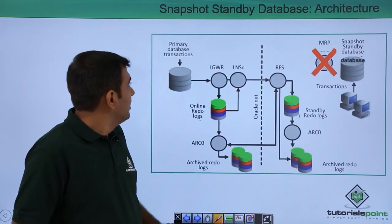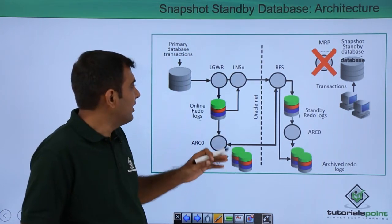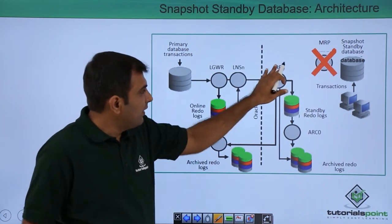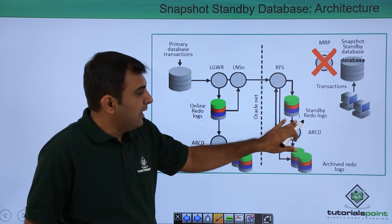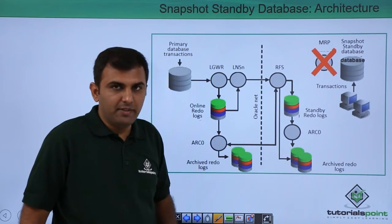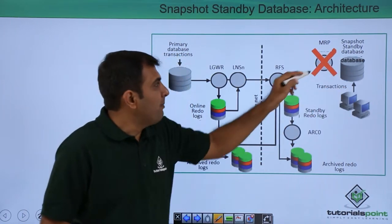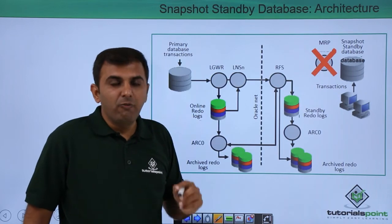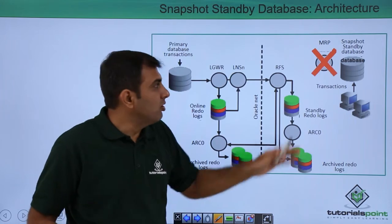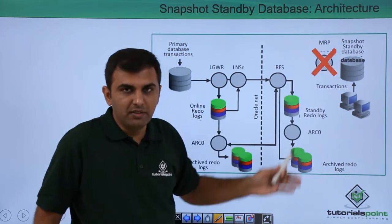Looking at the architecture: the primary database has ongoing transactions — insert, update, delete — with log writer and LSN working normally. The RFS process writes redo data to the standby redo log files and generates archive redo log files. However, in the Snapshot Standby Database, the MRP process is not running because it receives redo information but does not apply it, since you are performing test activity on the snapshot.